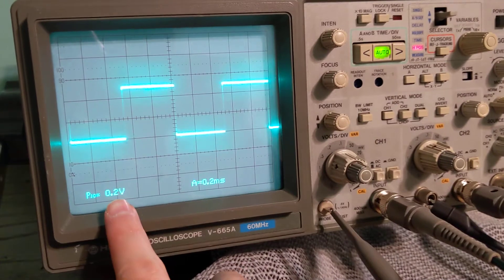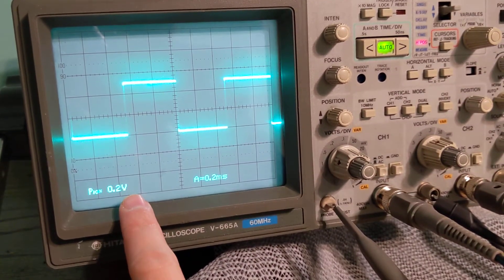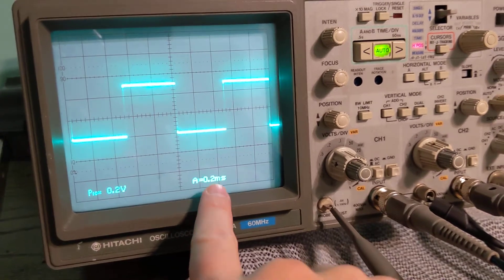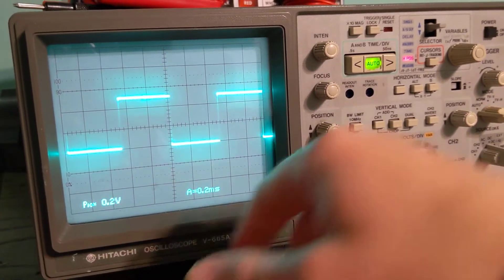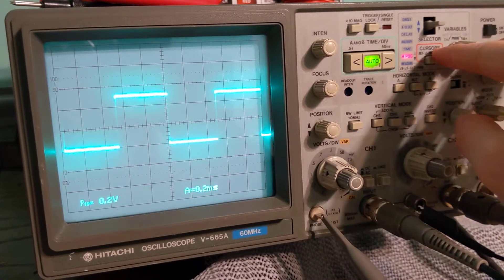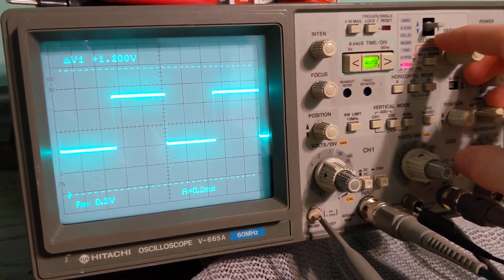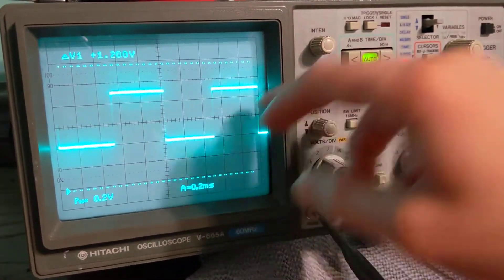Alright, so you see I'm at 0.2 volts per division, and then that's the time, 0.2 milliseconds. So let me go ahead and try and move this down to measure, so I can set my cursors here with this button and this knob.